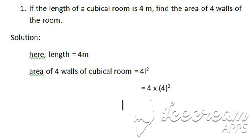4 times the square of 4 is 16. The unit here is meter squared, because we have taken the square of 4 meters.